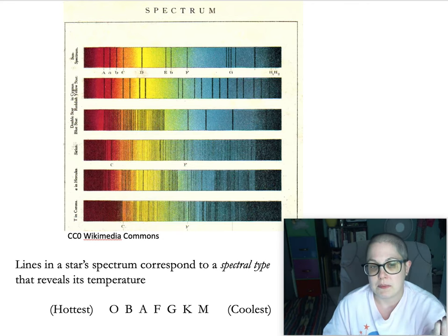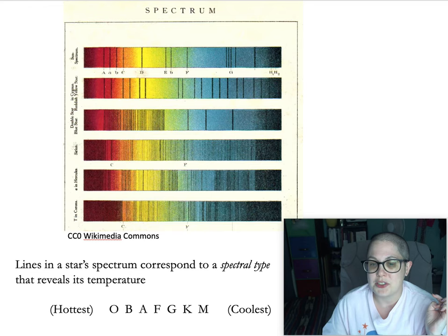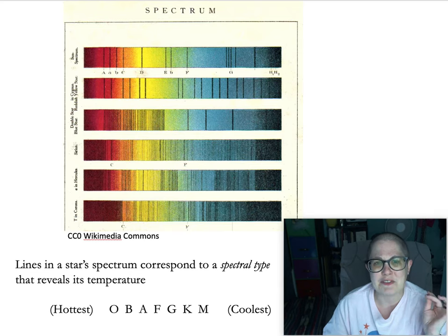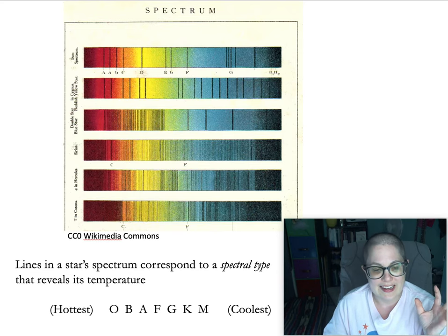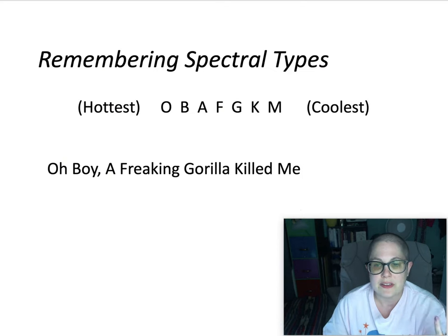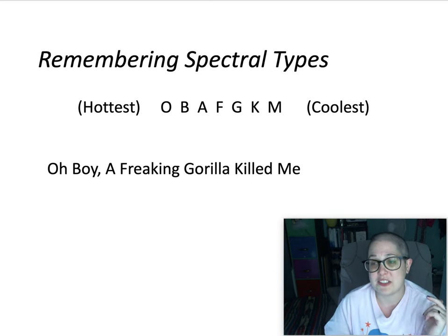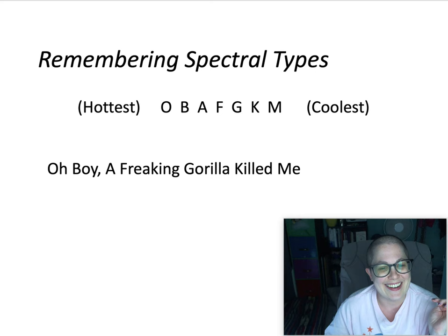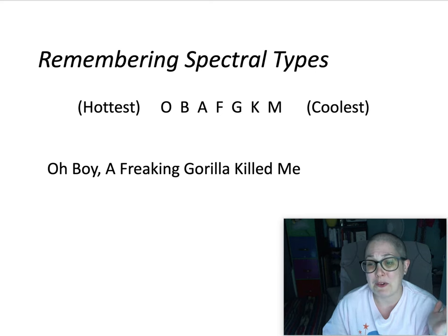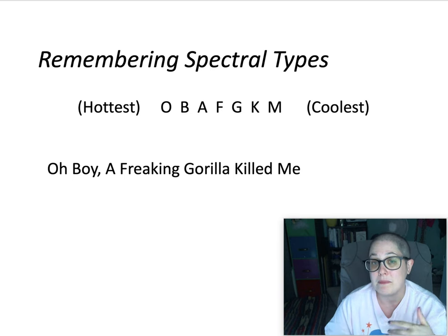Looking at the pattern of lines can actually get you the temperature as well. These are separated into certain types with different letters. There's a weird historical reason for that — they tried to make it alphabetical and realized that it was actually temperature if you rearranged them a certain way. It's fun to come up with mnemonics to remember these. One of my favorites came from a student: 'Oh Boy, A Fine Girl/Guy, Kiss Me' — or another version is 'Oh Boy, A Freaking Gorilla Killed Me.'